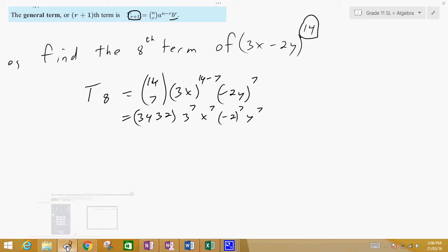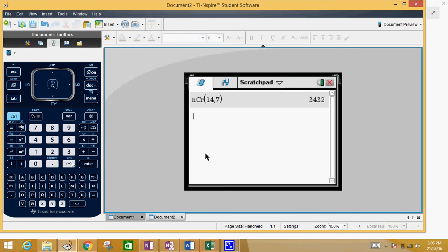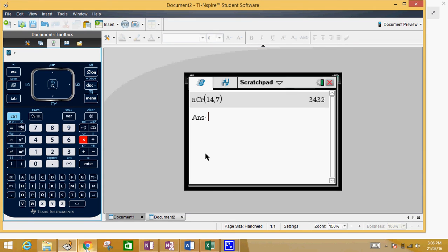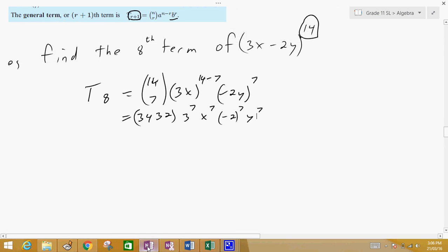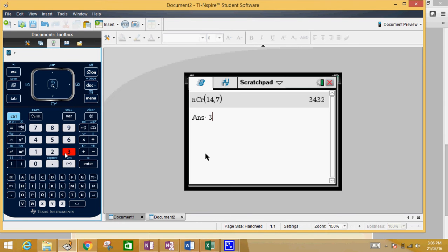So, back to my calculator. So, we're going to take this, and we're going to times it by 3 to the power of 7. So, 3 to the power of 7.